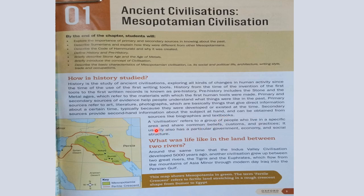Now we go to the word civilization. A civilization refers to a group of people who live in a specific area and share common beliefs, customs, and practices. It usually also has a particular government, economy, and social structure.